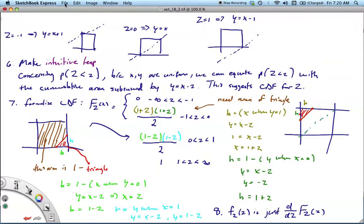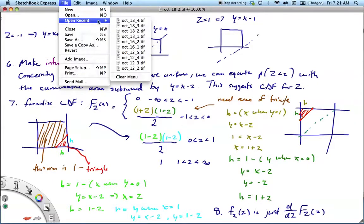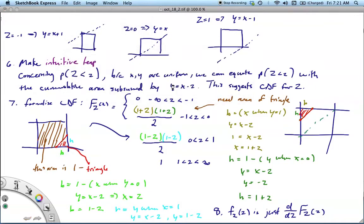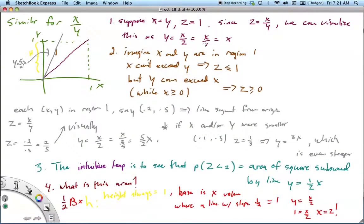Okay, so then we get our base times our height divided by 2. And basically, once you have this piece, which is your CDF, all you would need to do is take d by dZ of each one of these pieces to give you your PDF. Okay, so that's kind of the easier one. Okay, and then for X over Z, it's a bit trickier. And how much of this am I actually going to go through?